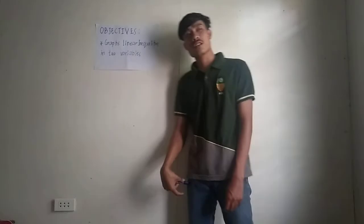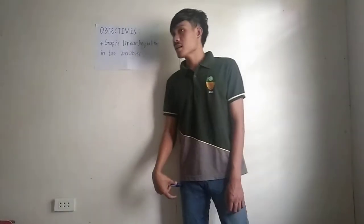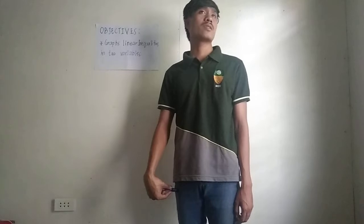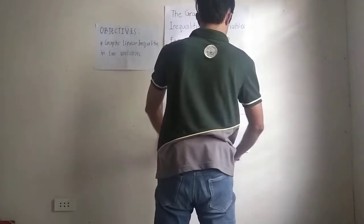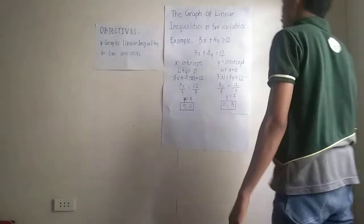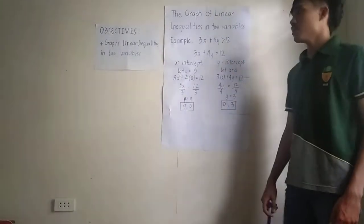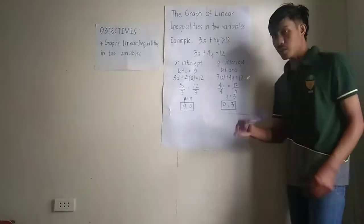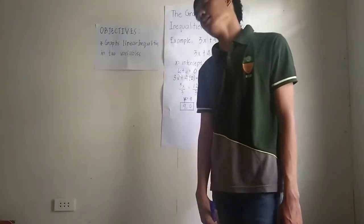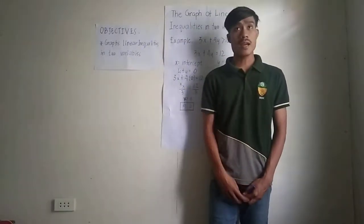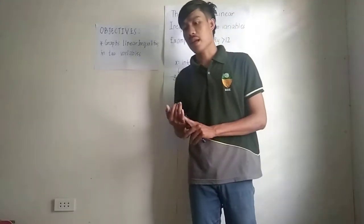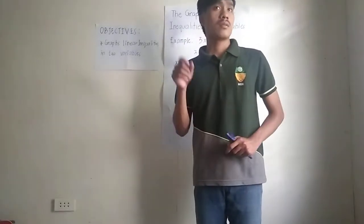The objective is to graph linear inequalities in two variables. Since we have no other activities, we are going to proceed to the discussion. Our discussion for today is the graph of linear inequalities in two variables. In linear equations, there are different ways or methods to get and graph the equation — we are going to find the x and y intercept values and we are going to use slope.